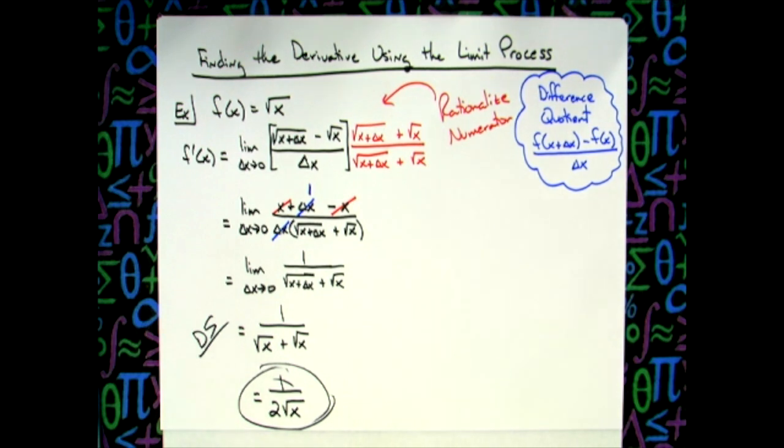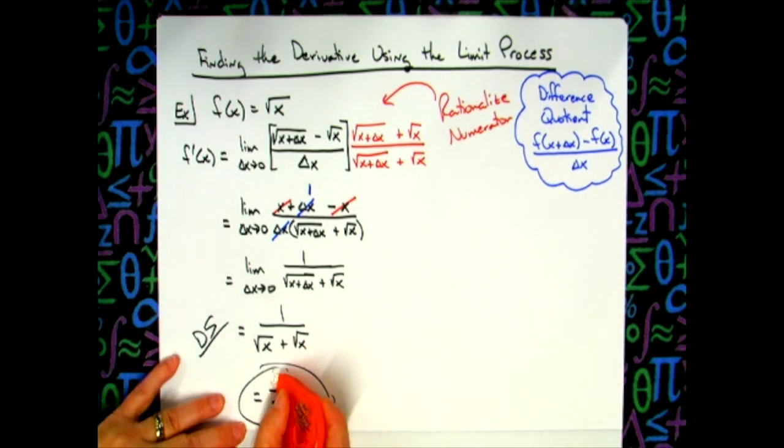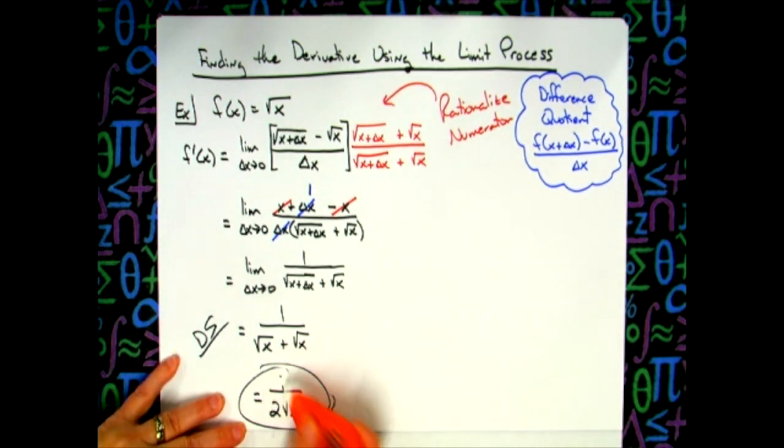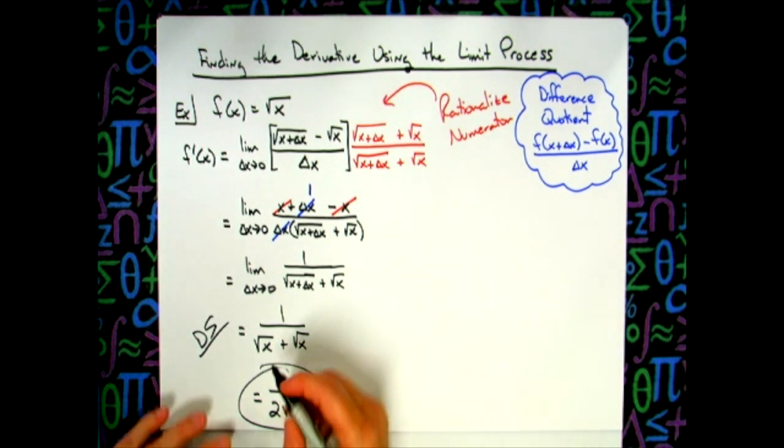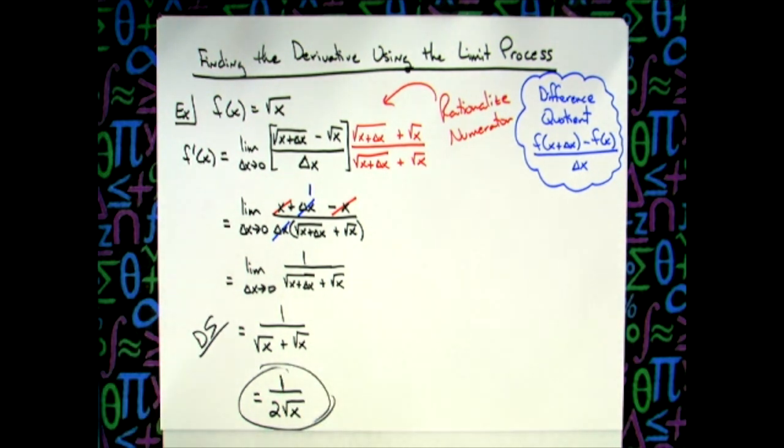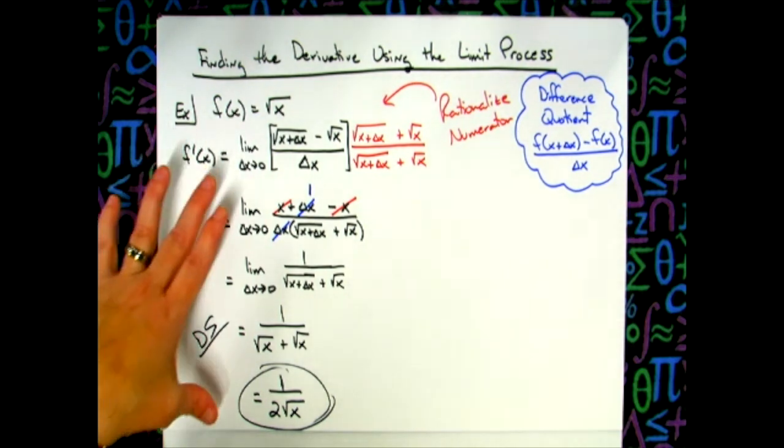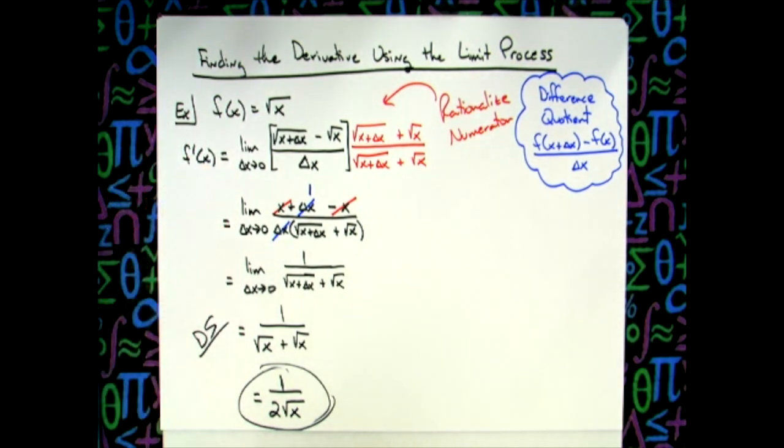So yes, long process when you take the derivative using that limit process. But most college level Calc 1 classes want you to know how to use that limit process, understand that formal limit definition of a derivative, and be able to work it out like this. Clearly, the farther you go into Calc 1, then you will no longer use this limit process and you'll go about using all those shortcut rules like the power rule, product rule, quotient rule, that sort of thing.